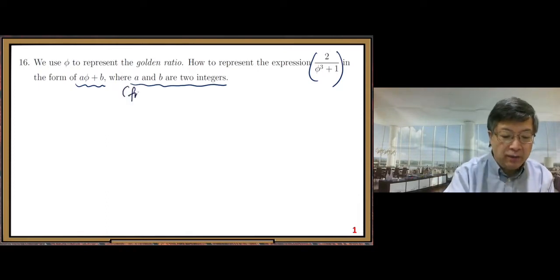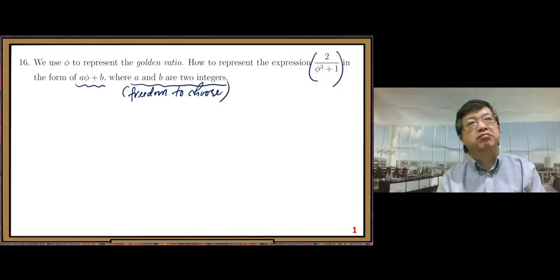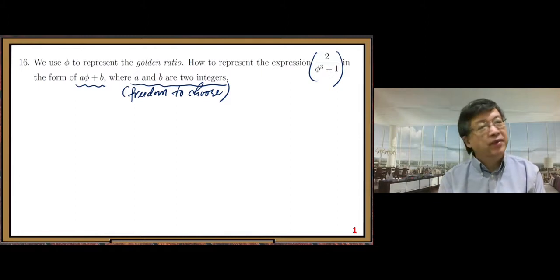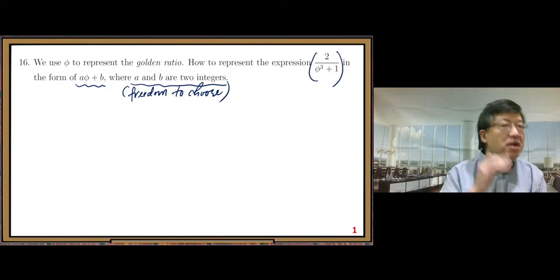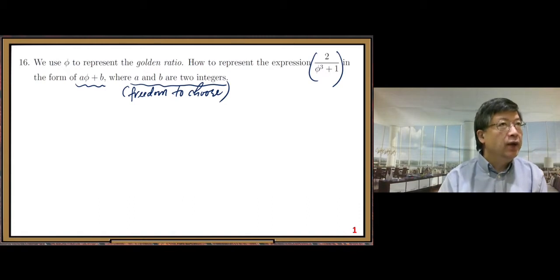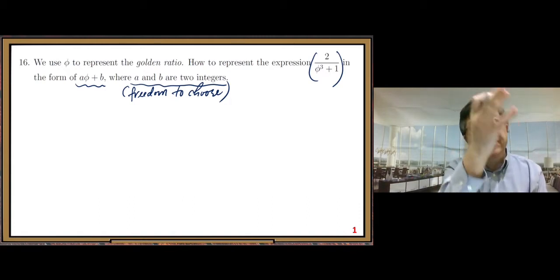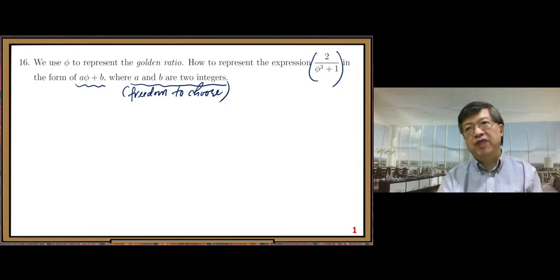Freedom to choose, but you cannot do experiments. There is no way you can quickly find a and b by experiments. Not a good way, not a smart way, not an efficient way. So we need to use the appropriate mathematical method to find the answer.